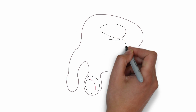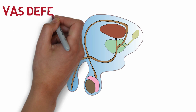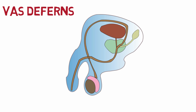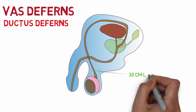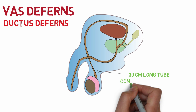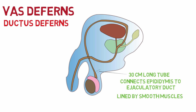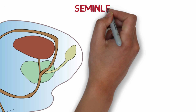The next internal reproductive organ is the vas deferens, also known as the ductus deferens. The ductus deferens is a 30 cm long tube that connects the epididymis to the ejaculatory duct. The wall of the vas deferens is lined by smooth muscles that help the passage of sperms through its lumen.